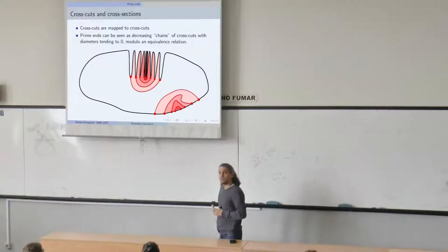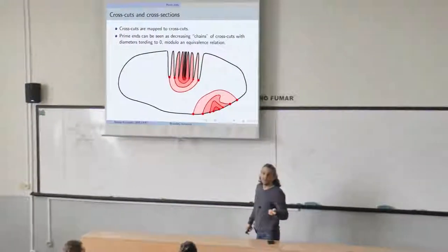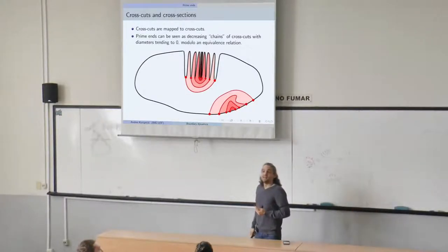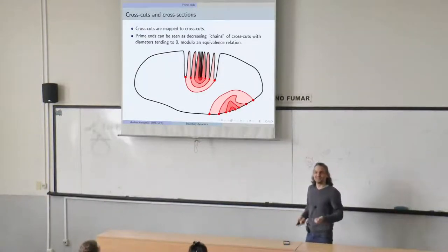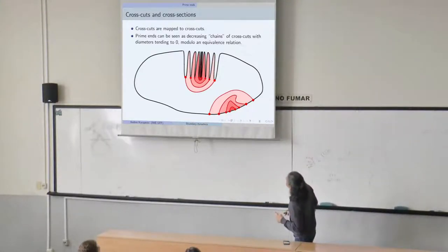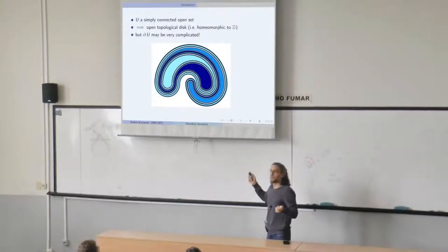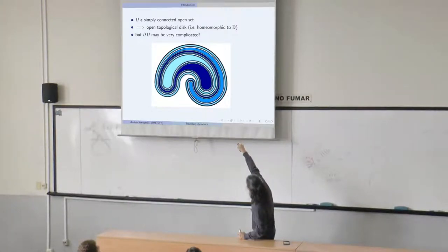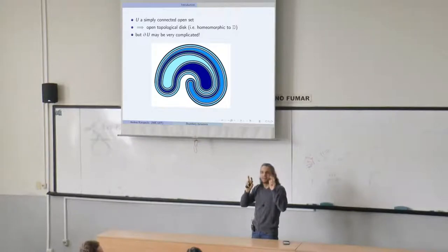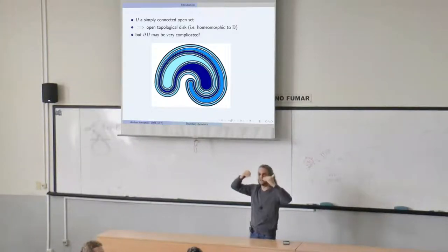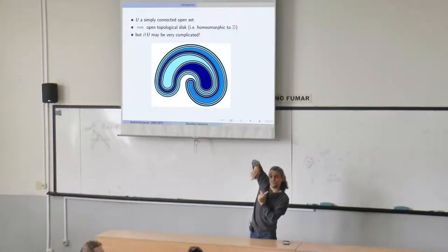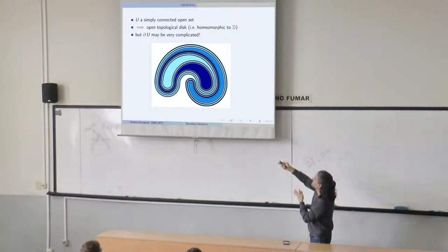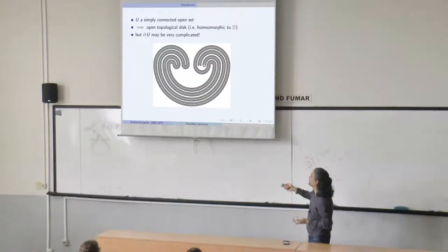Note that prime ends don't necessarily correspond to points of the boundary. Here in a simple region the chain accumulates in a whole segment, and in more complicated cases the correspondence is even harder to visualize. For the spiral example, a tongue spiraling and accumulating everywhere corresponds to one prime end — you can choose increasingly smaller crosscuts going towards the tongue. But in cases like the pseudo-circle it's harder to find an image of what a prime end is.